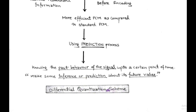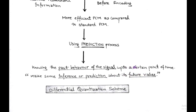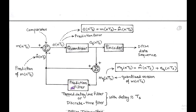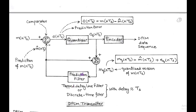This modified scheme is based on the prediction process. Knowing the past behavior of the signal, we make some prediction or inference about its future value over a certain period of time. Using a prediction filter, the redundant information may get corrected, and the system is called Differential Pulse Code Modulation or DPCM.